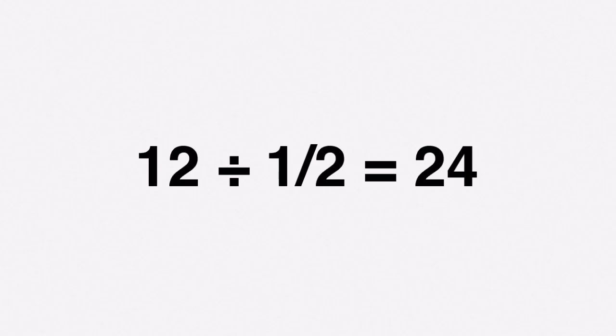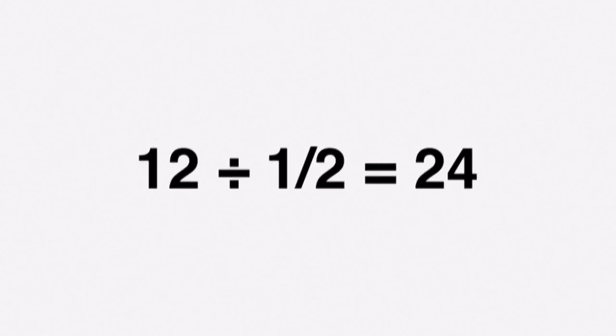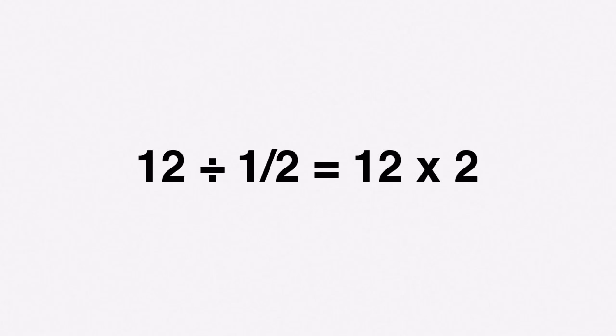Does this always work? Let's check our earlier problem: 12 divided by one half equals 24. Is 12 divided by one half the same as 12 times the reciprocal of one half, which is 2? Well, 12 divided by one half is 24, and 12 times 2 is also 24. Yes, it works.